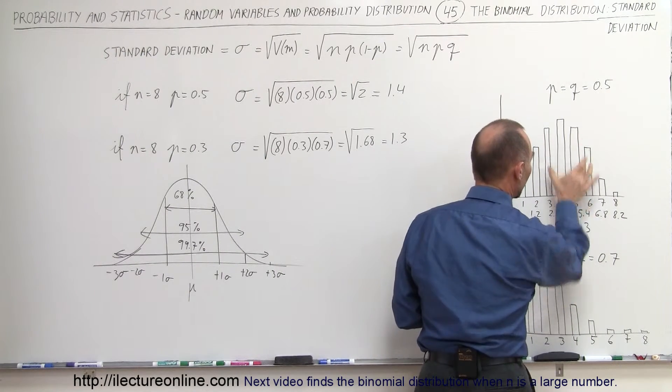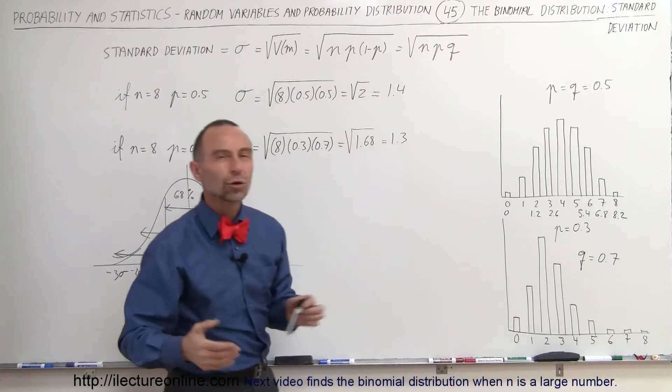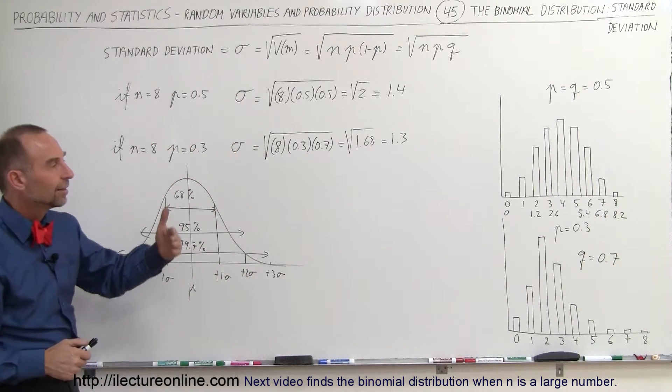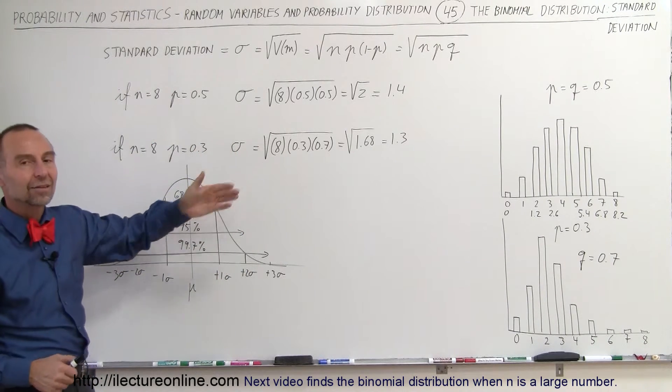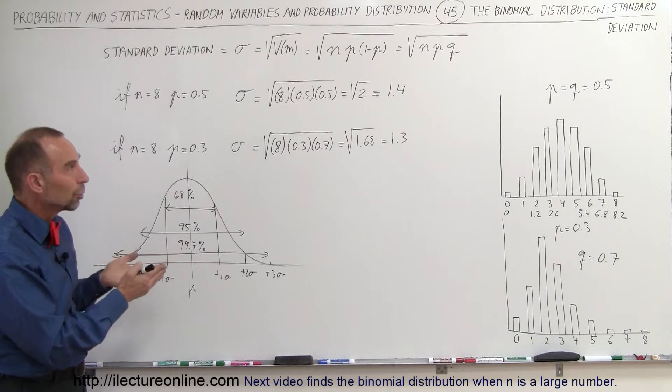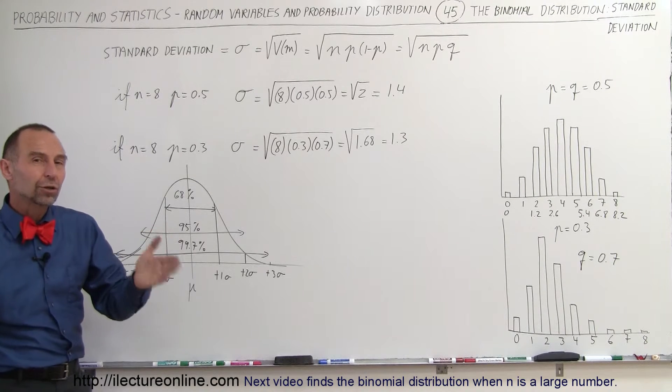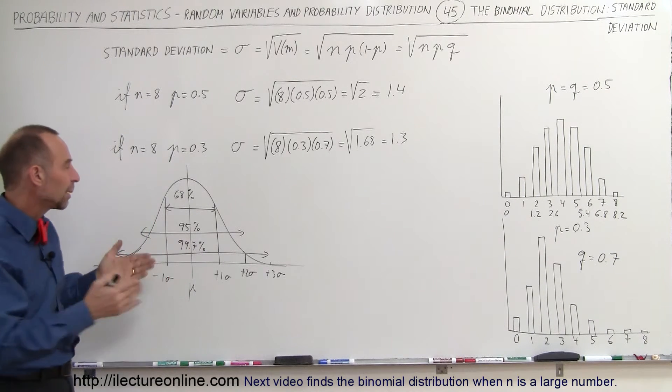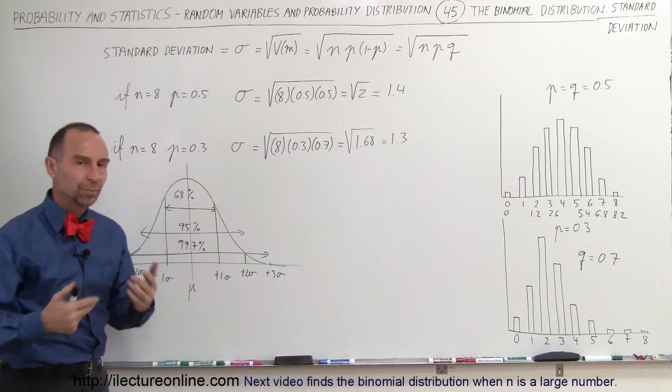And plus minus 1 sigma incorporates at least about two-thirds of the values. So it looks like the way we calculate the standard deviation on the binomial distribution holds pretty close to the typical standard expectation of how it explains your distribution of your values.